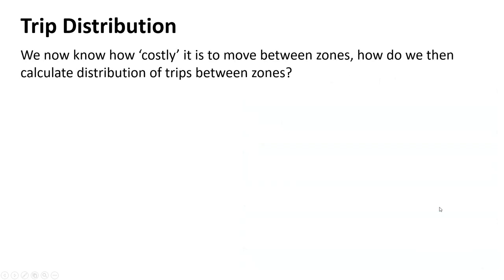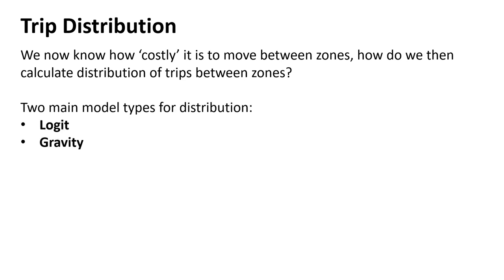There's a general friction and impedance factor between each pair of zones — how easy it is to get from one to the next. The two main distribution systems are the Logit model, which has become popular over the last 10–15 years, and the Gravity model, which is the classic and still most commonly used approach.